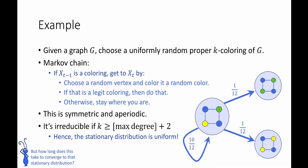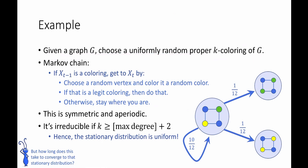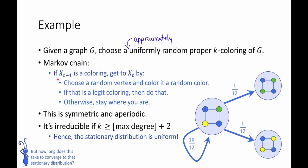Let's see an example of how this might go for proper k colorings. Our goal is, given G, to output a uniformly random proper k coloring of G. Here's one Markov chain which has this as a stationary distribution. The states are going to be proper k colorings of our graph. If x_{t-1} is a coloring, we get to the next state x_t by the following random process: first, we choose a random vertex, then color it a random color — say, green.